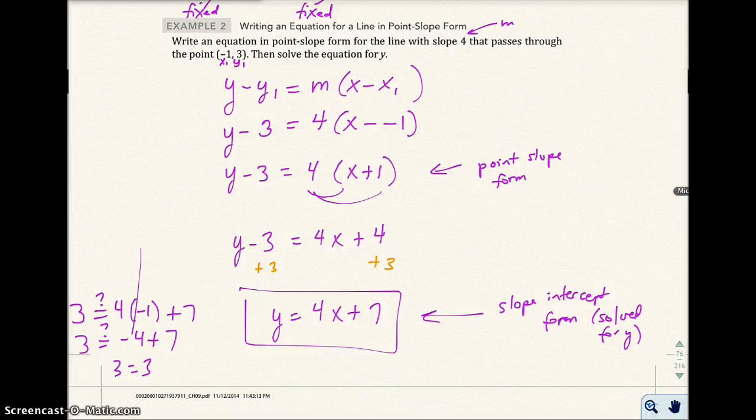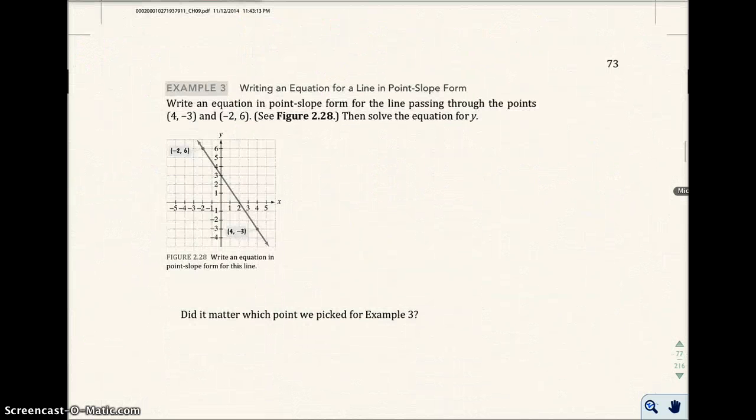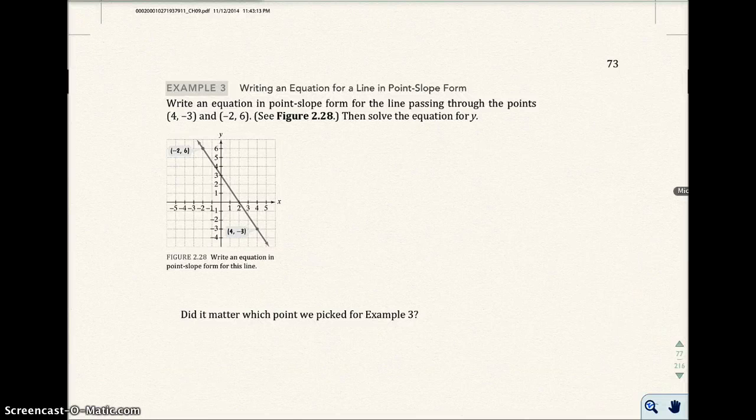Okay, so let's go on to the next example. I think it's example 3, and now we're going to keep on writing an equation for the line in point-slope form. Write an equation in point-slope form for the line passing through the points (4, -3) and (-2, 6). See the figure and solve the equation for y.